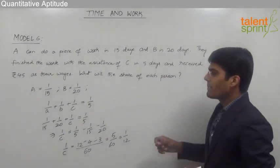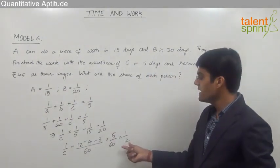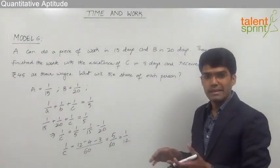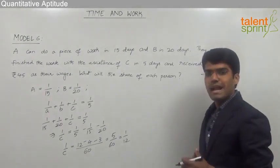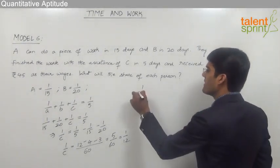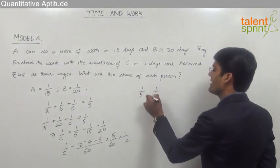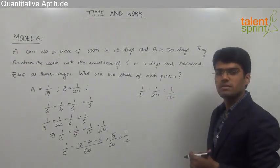So we can say that the capacity of A is 1/15, the capacity of B is 1/20, and that of C is 1/12. The capacity here is nothing but work done by each person in one day. So we can say that the ratio in which the amount has to be distributed among A, B and C here is 1/15 : 1/20 : 1/12. That is capacity of each of these persons.